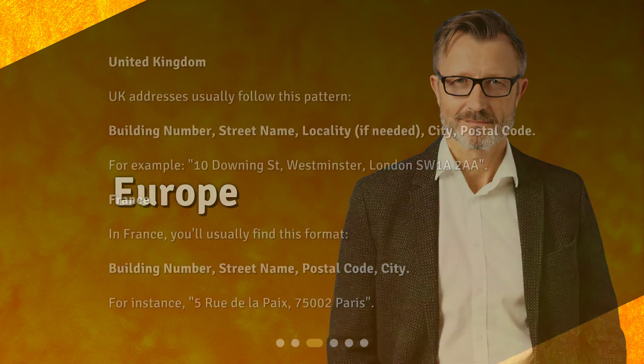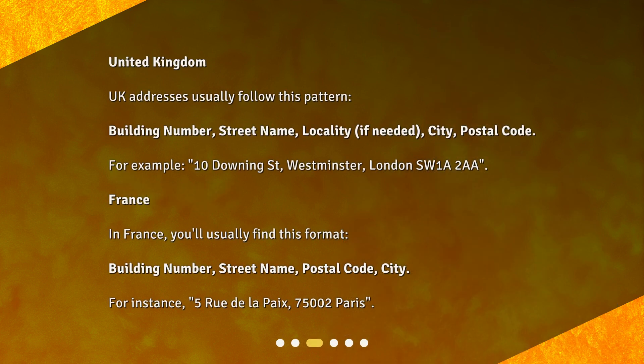Europe. United Kingdom addresses usually follow this pattern: building number, street name, locality if needed, city, postal code. For example, 10 Downing Street, Westminster, London, SW1A 2AA.